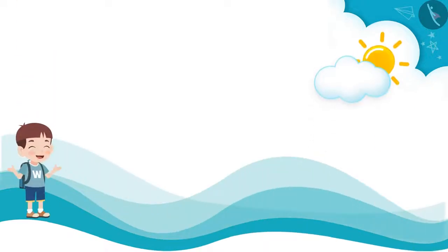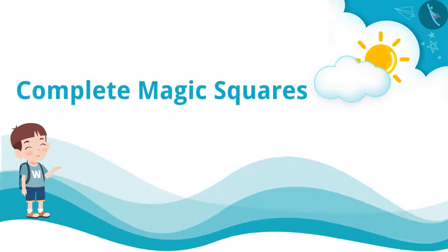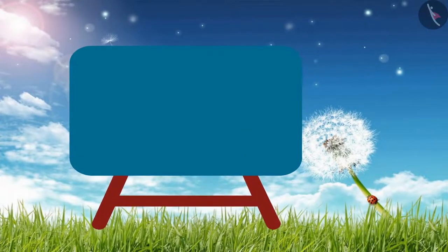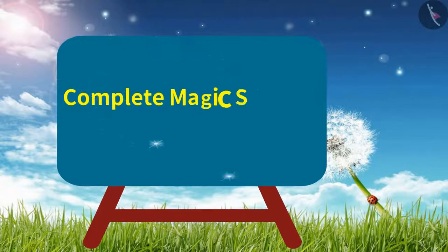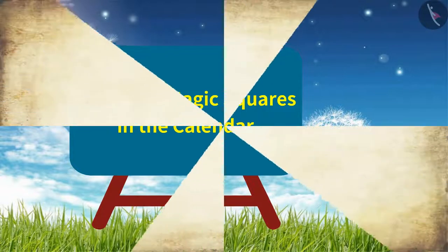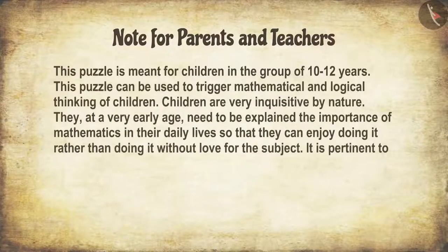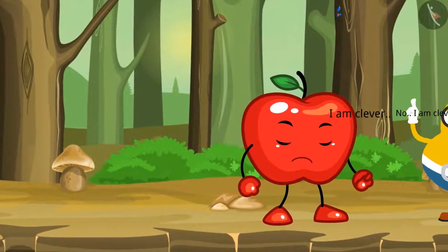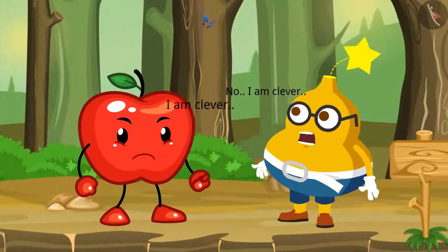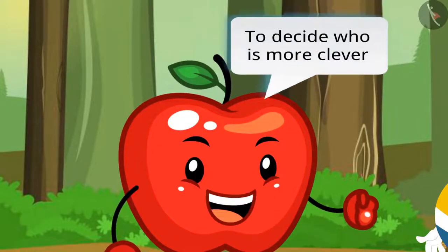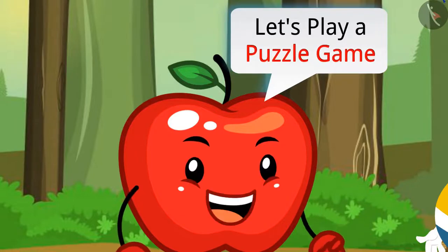4.3 Complete Magic Squares Part 2. In this video we will learn about complete magic squares in a calendar. Today Appy and Fruity are arguing about who is more clever. Appy says: to decide who is more clever, let us play a puzzle game.